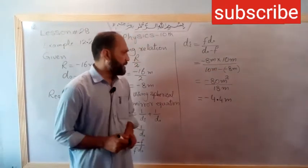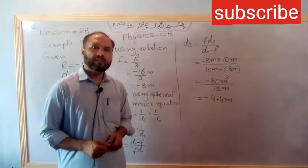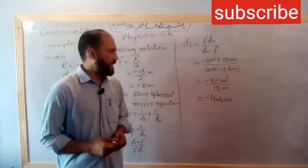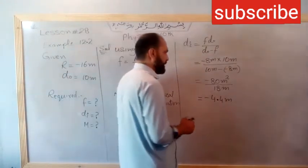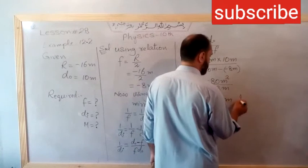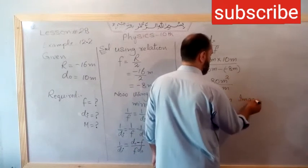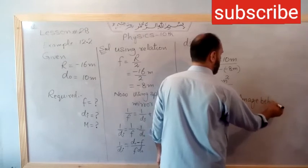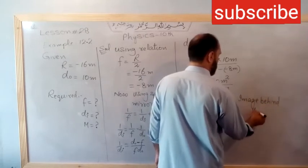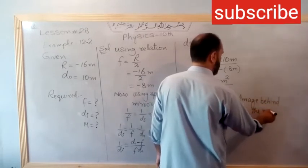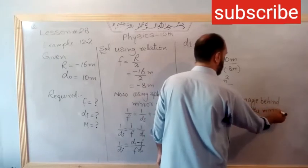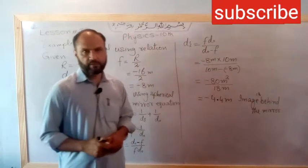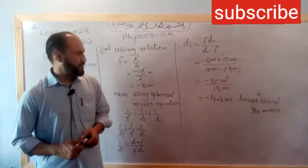Minus 4.4 meters. The negative sign means the image is virtual, behind the mirror. The image is behind the mirror, a virtual image.